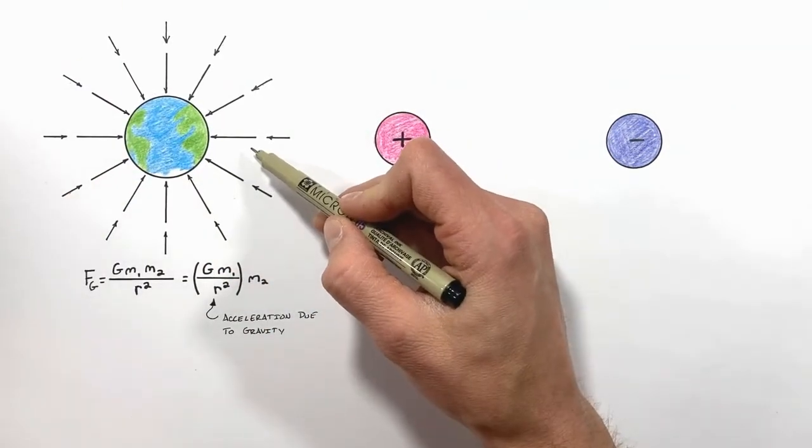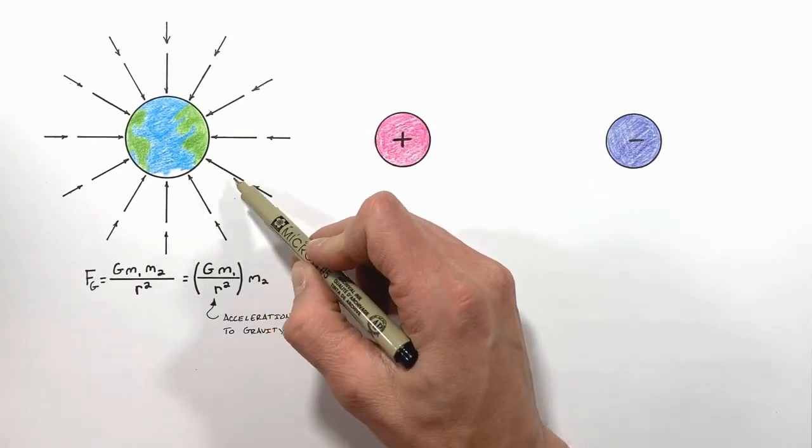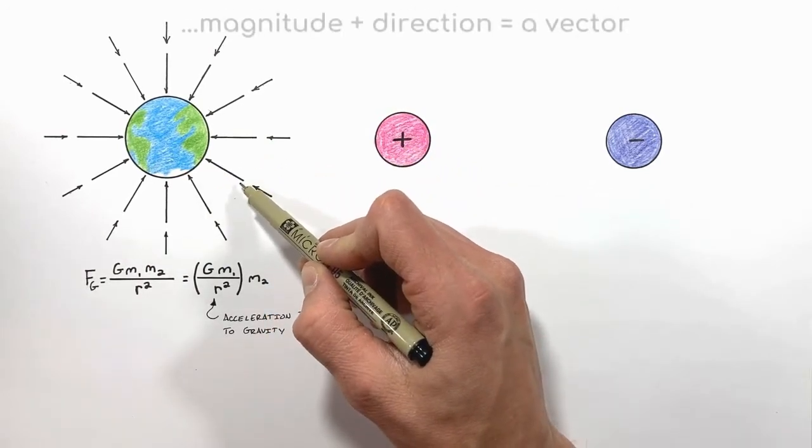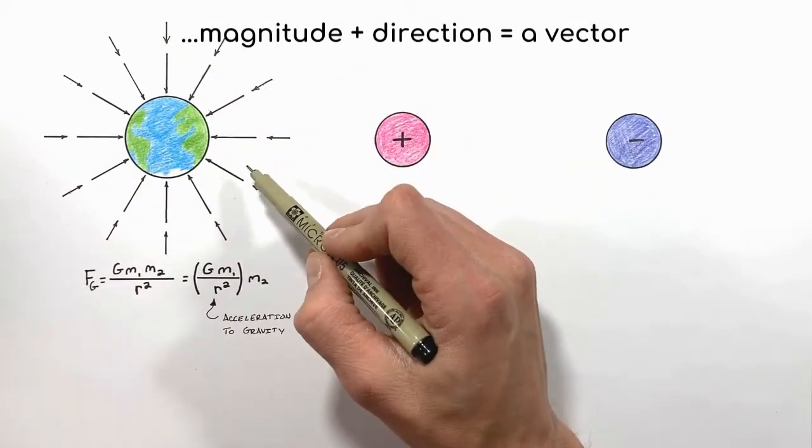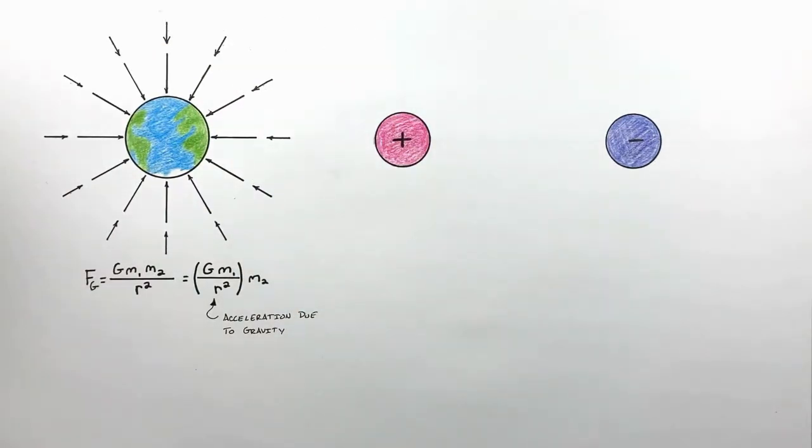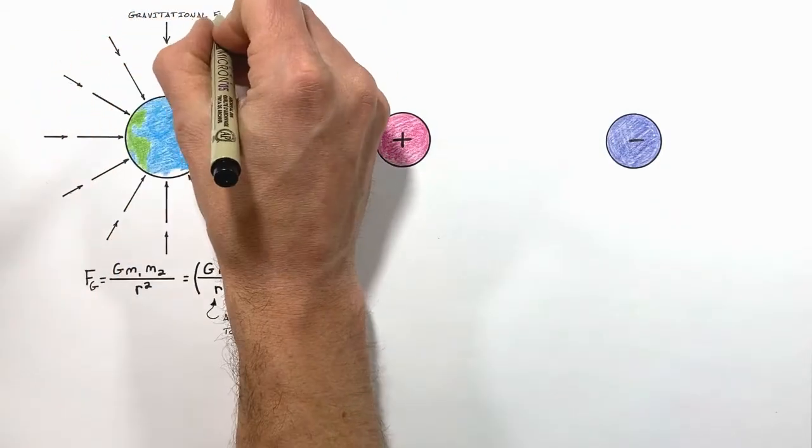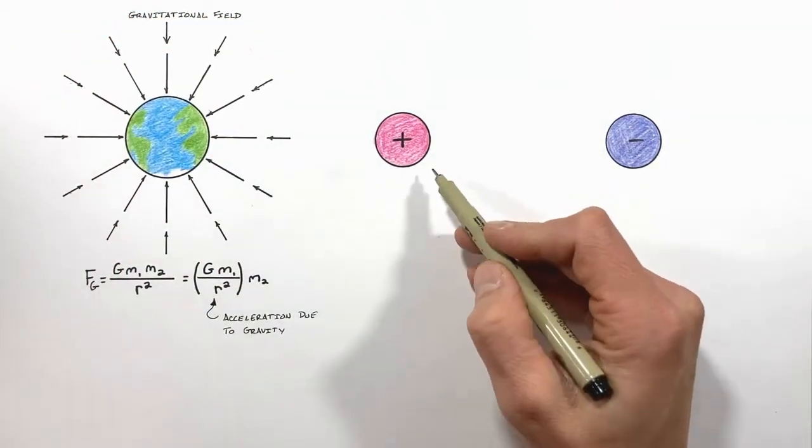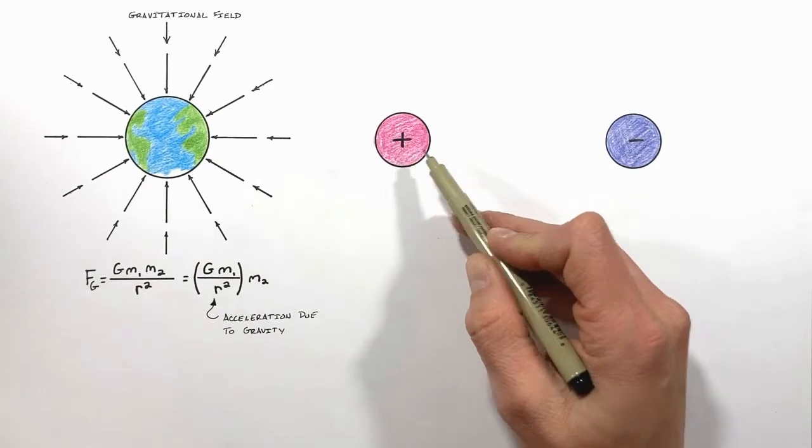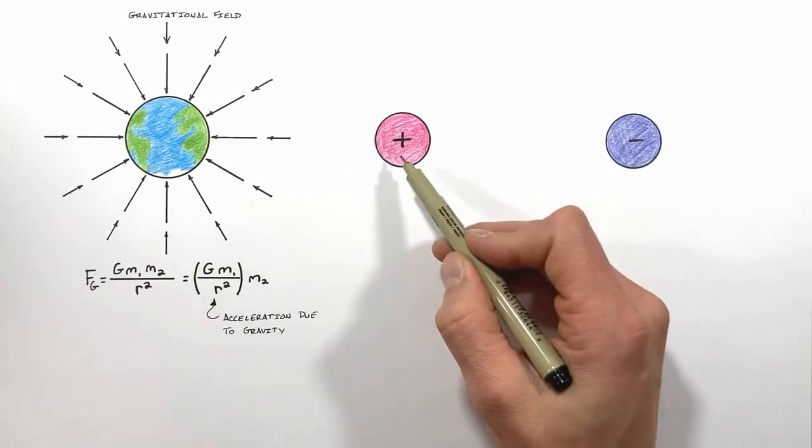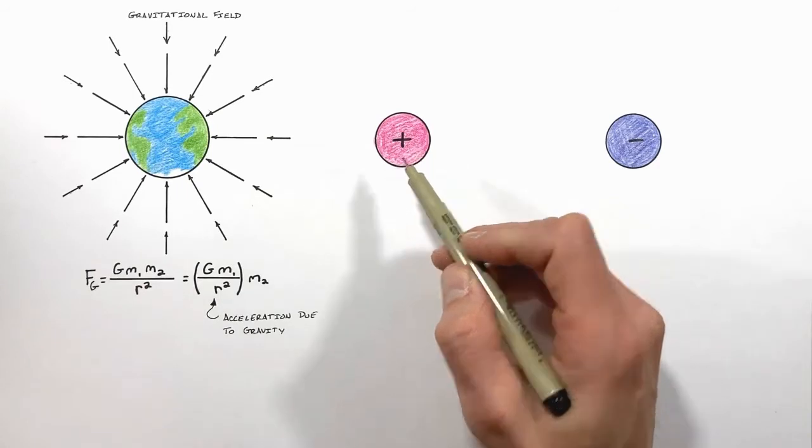So what we've done here is we've created a sort of map which shows the acceleration due to gravity in both its magnitude and direction in space around the Earth, and we call this map the gravitational field. In a similar manner, we can map out the electric field around charges, showing not the gravitational force around them but the electric force around them.